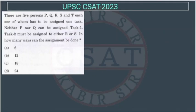Let's see this question. There are 5 people — P, Q, R, S, T — each one of whom has to be assigned one task. So each one is assigned one task, meaning there are 5 tasks. Neither P nor Q can be assigned task 1. Task 2 must be assigned to either R or S. In how many ways can the assignment be done?